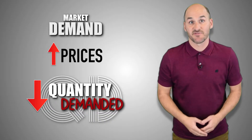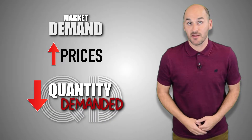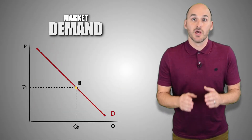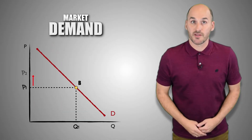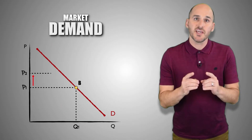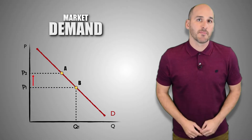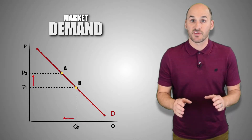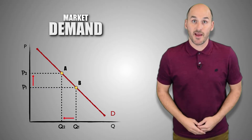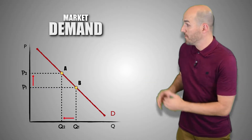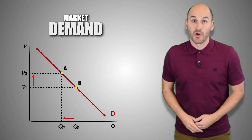However, the first initial units of a good have a higher marginal utility, so consumers will think it's worth buying them even at higher prices — you've got to satisfy that utility, right? As a result, an increase in price level in the market causes a decrease in the quantity demanded, and a movement along the demand curve from point B to point A.